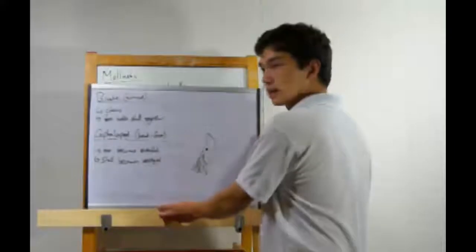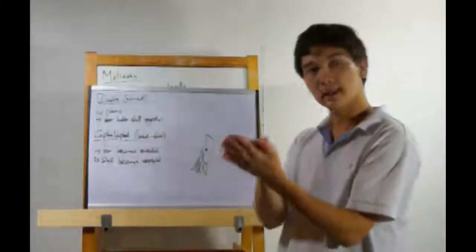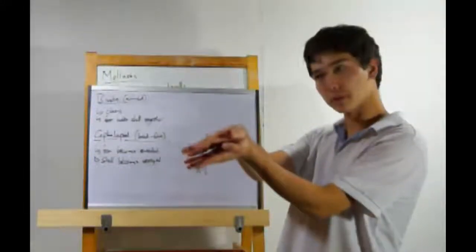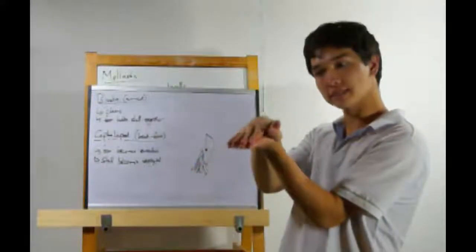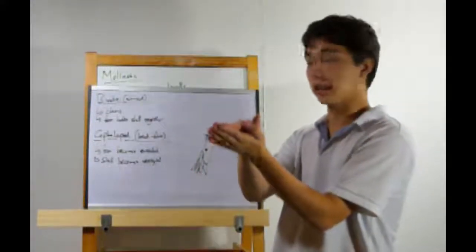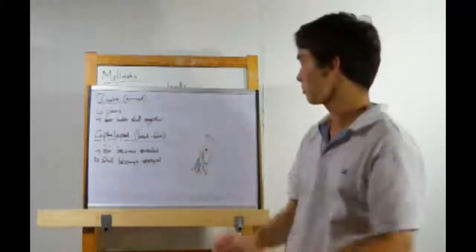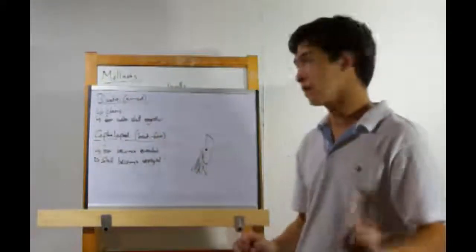Bivalves. Things like clams. These have two shells, and the foot is what holds the shells together. Now generally this means it's very tightly clamped shut. Some species actually can move by flapping their shells. Unusual, but yes, that's what bivalves do.